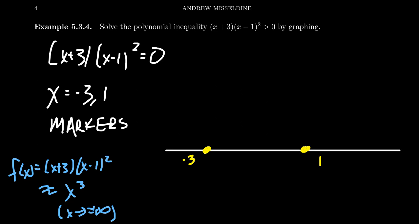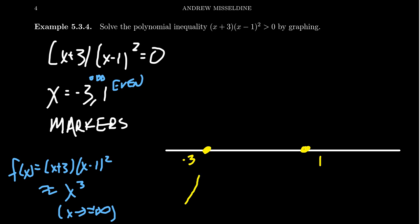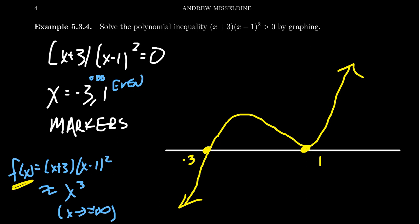We also know about its intercepts. That negative three had an odd multiplicity, so it's going to cross the x-axis. But at one, we have an even multiplicity, so we know we're going to touch the x-axis. So our picture has to look something like the following: we come up and cross, we come back down and touch, and then we go off towards infinity. So we get the graph of our function f(x).